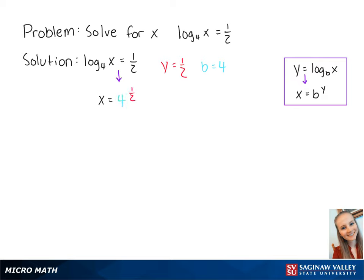4 to the 1 half power is equal to the square root of 4, which is equal to 2. So x equals 2. This is the final answer.